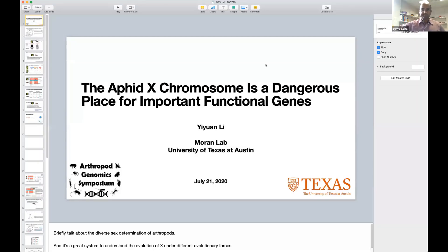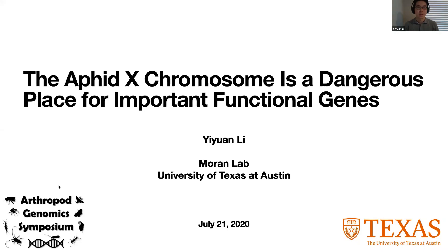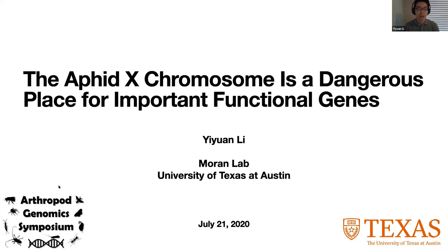Let's go on over to YY's presentation on the aphid X chromosome. Today I'm going to talk about why the aphid X chromosome is a dangerous place for important functional genes. As Tom mentioned earlier, the aphid is a great system for understanding chromosome level evolution, especially their unique life cycle where most generations are asexual reproduction and males are only a tiny little part of their life cycle. Based on Jackery et al.'s extensive studies and theoretical models, they found that the X chromosome is enriched with male-biased genes, evolving fast compared to other chromosomes, possibly due to relaxed purifying selection on male-biased genes.